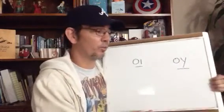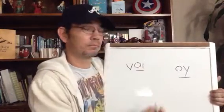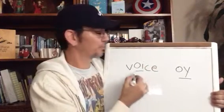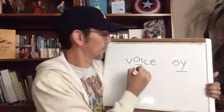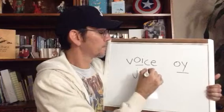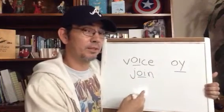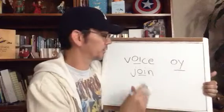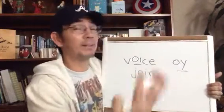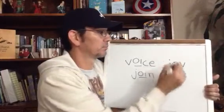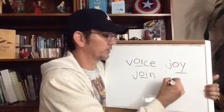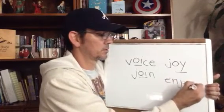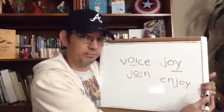'Voice.' And you can hear that 'oi' right there — voice. How about this one? Remember that this makes the 'oi' sound — so what would that be? 'Join.' Join. But that wasn't the only way. We also had O-Y that made the same sound, in words like 'joy.' Joy. And 'enjoy.' Joy and enjoy. So that was last time, and I hope you practiced.